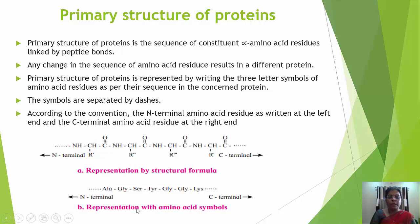The second way of representing the structure of protein is by using amino acid symbols. For example, ALA for alanine, then glycine, and so on. The N-terminal is on the left and the C-terminal is on the right of the polypeptide chain. The alpha amino acids are attached to each other and represented by their three-letter symbols bonded to each other.